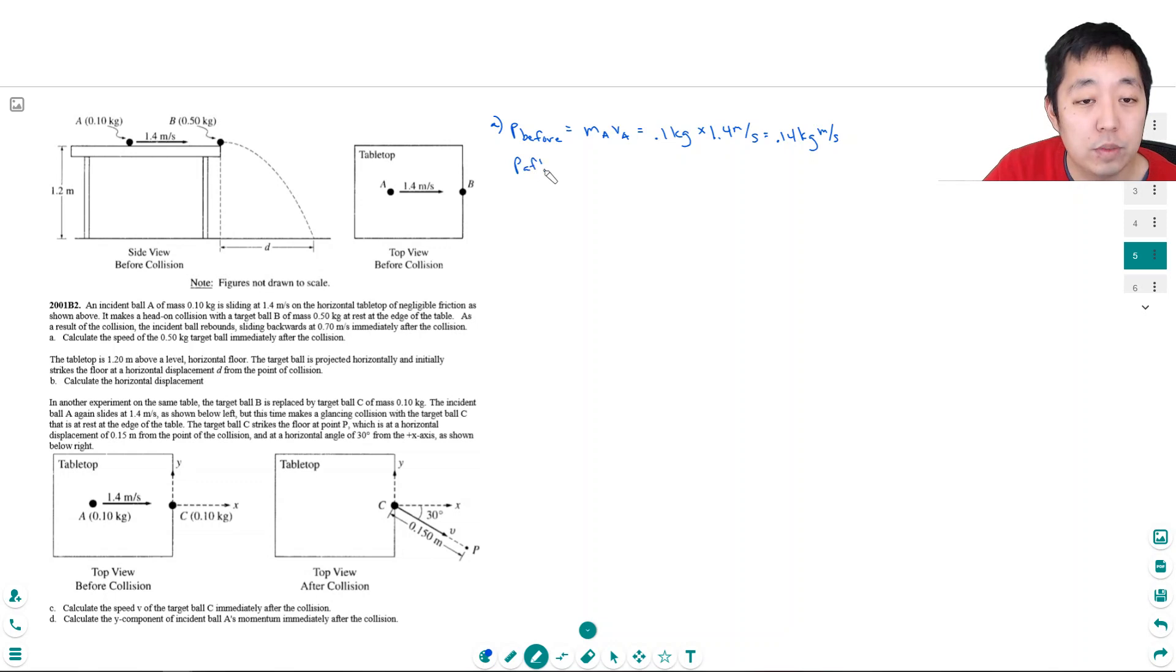After the collision, this ball is rebounding, so the 0.1 kilogram has a negative velocity of 0.7 meters per second. I have to put a negative sign because it's going the other way, and velocity in this equation is definitely a vector quantity. Plus the mass of B, which is 0.5 kilograms, times the velocity of B.